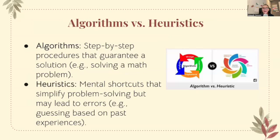Next is the difference between algorithms and heuristics. Algorithms are step-by-step procedures that guarantee a solution — for example, solving math problems using a set procedure. Heuristics are mental shortcuts that simplify problem solving but may lead to errors, basically guessing based on past experiences, versus using a structured algorithm.